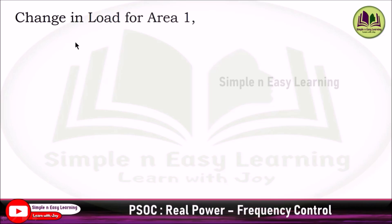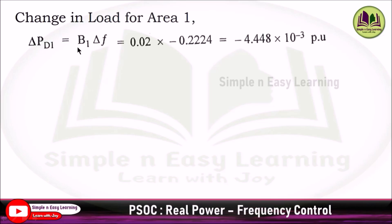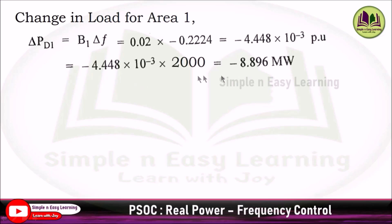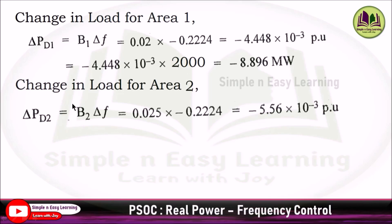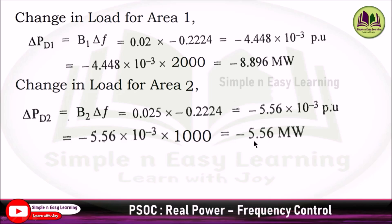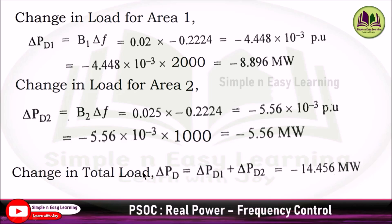The change in load due to frequency drop: for area 1, ΔPD1_load = B1·ΔF = 0.02 × (−0.2224) = −4.448×10⁻³ pu = −8.896 MW. For area 2, ΔPD2_load = B2·ΔF = −5.56×10⁻³ pu = −5.56 MW. The total change in load ΔPD = ΔPD1_load + ΔPD2_load = −14.456 MW.